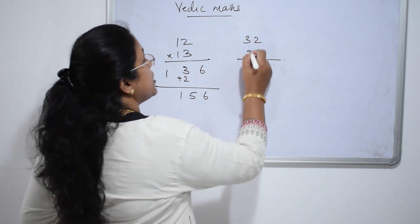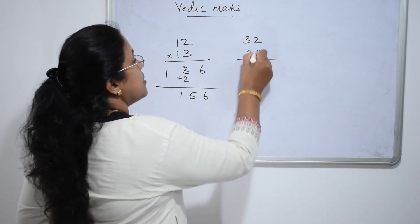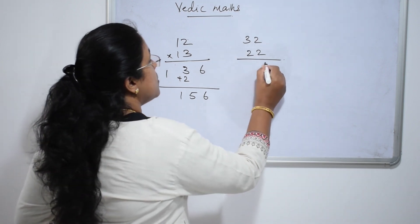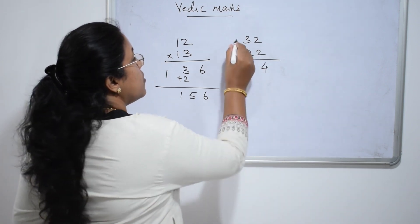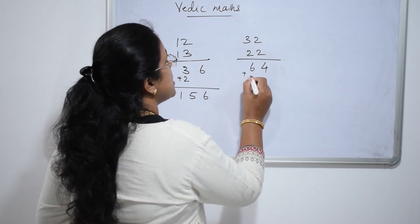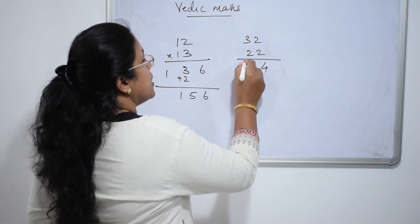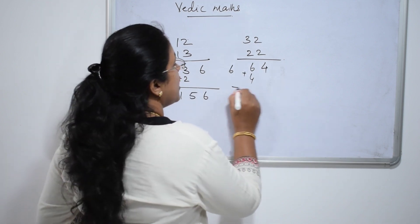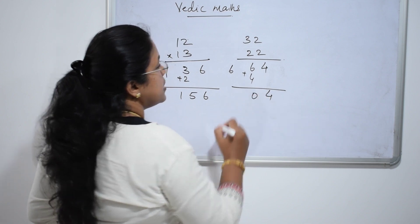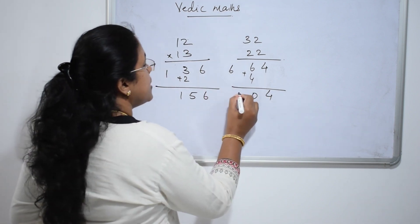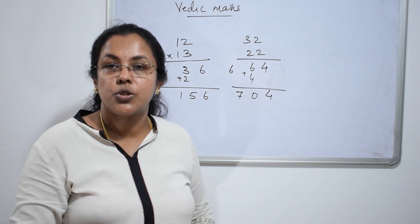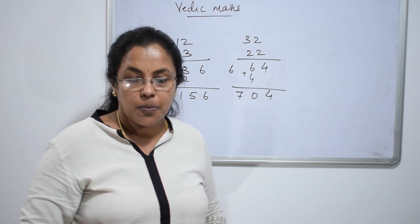Next, 22 into 32. First, multiply the digits in the unit place: 2 twos are 4. Now cross multiply: 3 twos are 6, plus 2 twos are 4. That gives 6 plus 4 is 10 — carry over 1. Then 6 plus 1 is 7. I hope that is clear. We will solve more problems now.